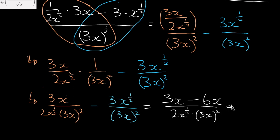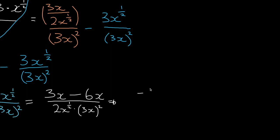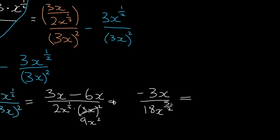Now we can simplify further, giving negative 3x in the numerator. Expanding the denominator: 2 times 3 is 6 — wait, 9 times 2 is 18 — giving 18x to the power of 5/2 in the denominator. So the final simplified answer is negative 1 over 6x to the power of 3/2.